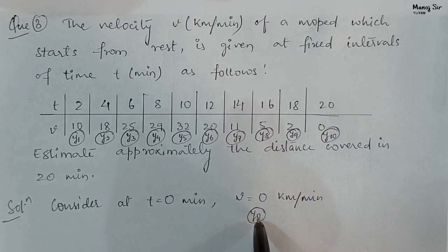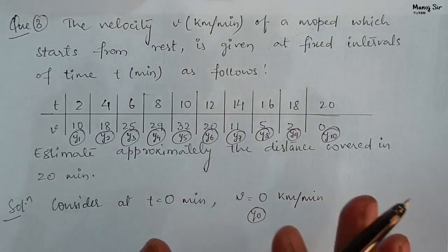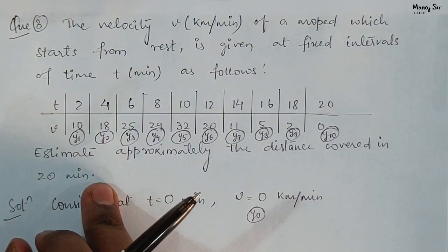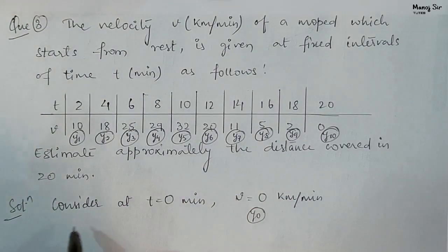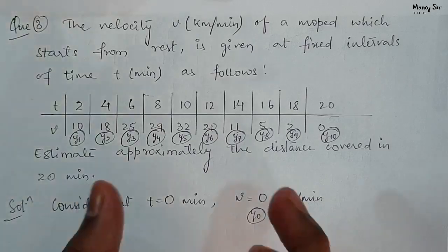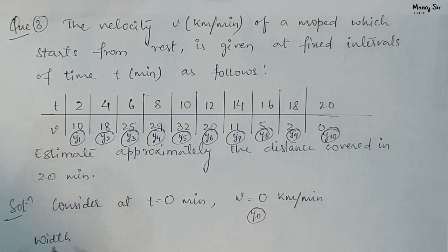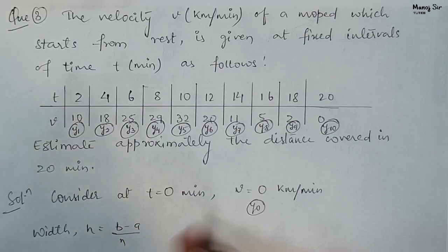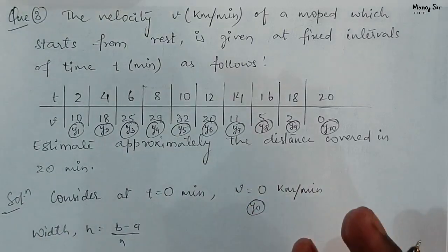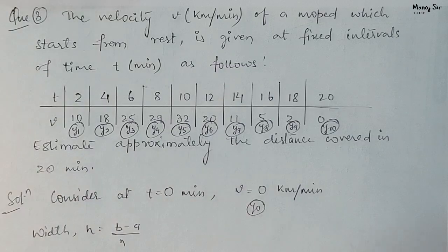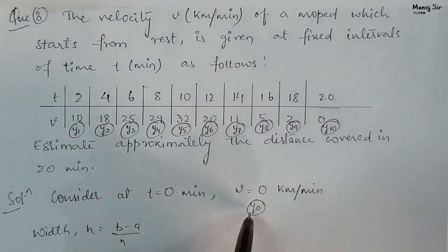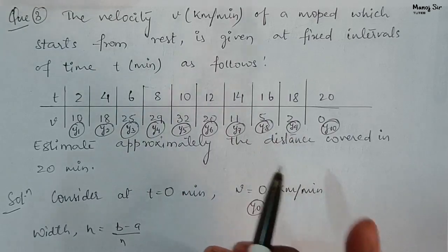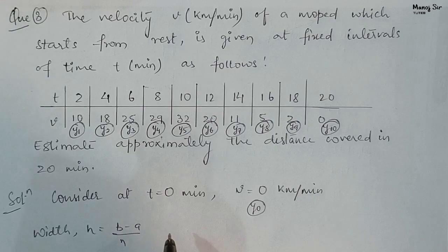We need to find the approximate distance covered in 20 minutes. Before applying the formula we need to find h, the width, given by h equals b minus a upon n, where n is the number of steps. To find n, count the number of elements in the problem and subtract 1. Here the number of elements are 11, so n equals 11 minus 1, which gives n equals 10.